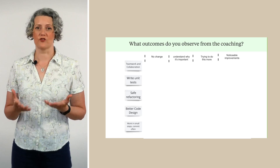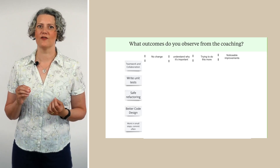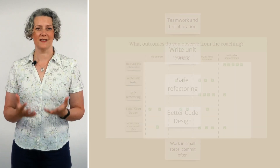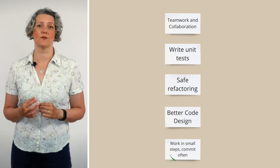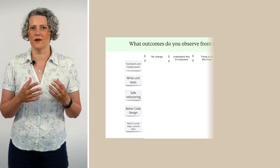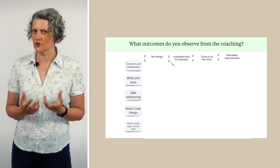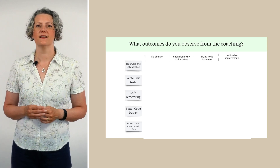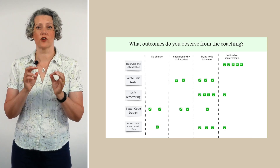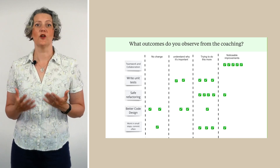When I'm coaching teams, we hold retrospectives quite regularly. As part of that, I ask specifically about five areas where I think coaching should be making a difference: teamwork and collaboration, writing more and better unit tests, refactoring more safely, better code design, and working in smaller steps — committing more often. I ask people to assess for themselves whether the coaching has made any difference to these things: no change at all, starting to understand how to achieve this, actually doing it and trying to do it more, or already getting good results and going to carry on after I've gone. Usually I ask everyone in the team to put check marks on a grid, and usually I see a response showing that the coaching is making a difference. This kind of assessment isn't that difficult — you just ask the developers what they think, and then follow up regularly after each block of coaching.